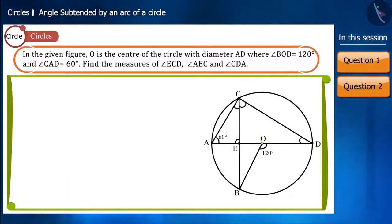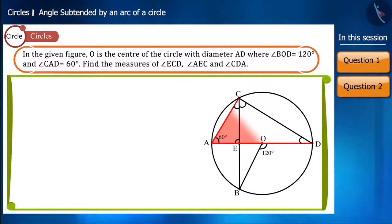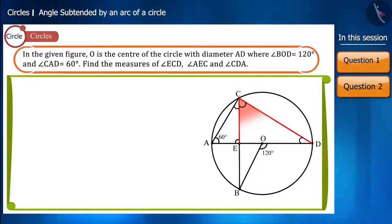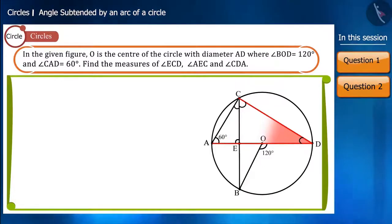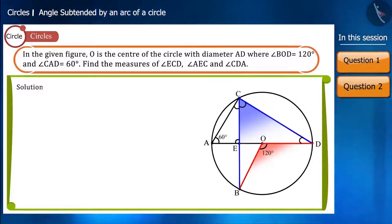In the figure, O is the circle with centre, AD is the diameter, angle BOD measures 120 degrees, and angle CAD measures 60 degrees. Find the value of angle ECD, angle AEC, and angle CDA. Take a look at the figure. Angle BCD and angle BOD are angles subtended by the same arc BD.